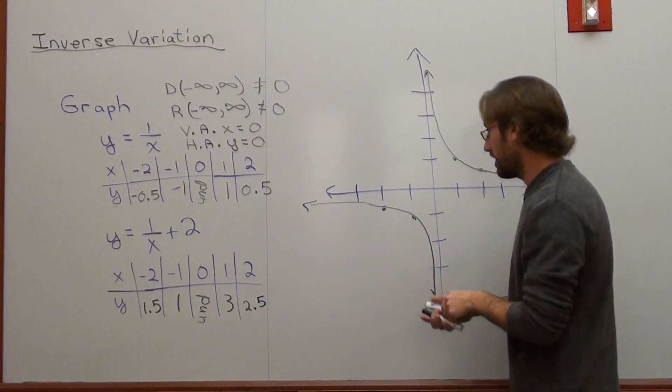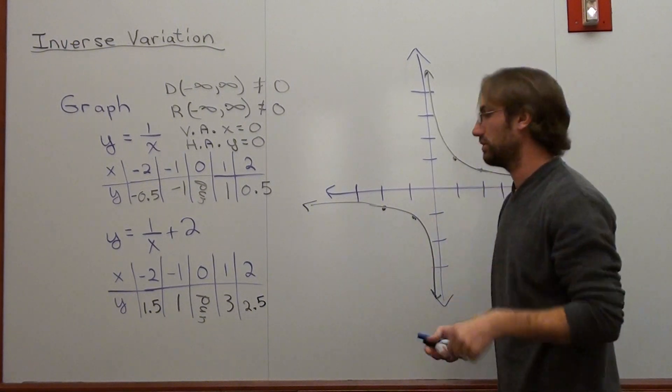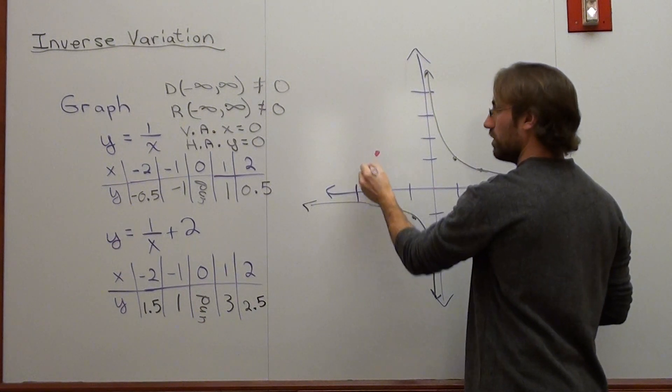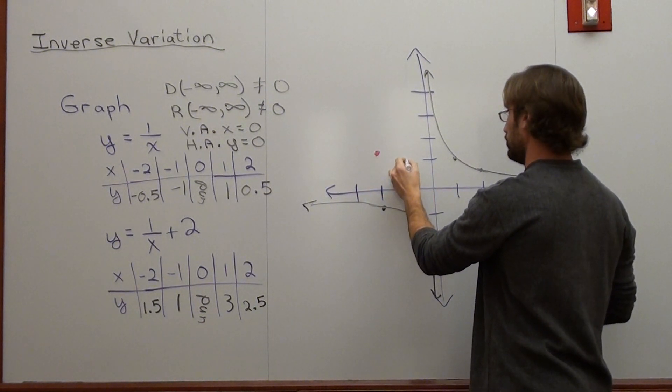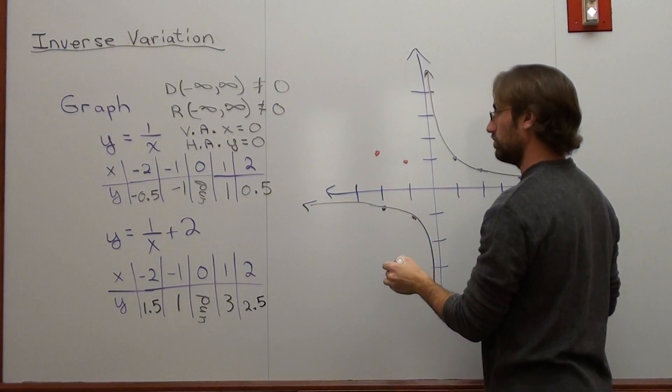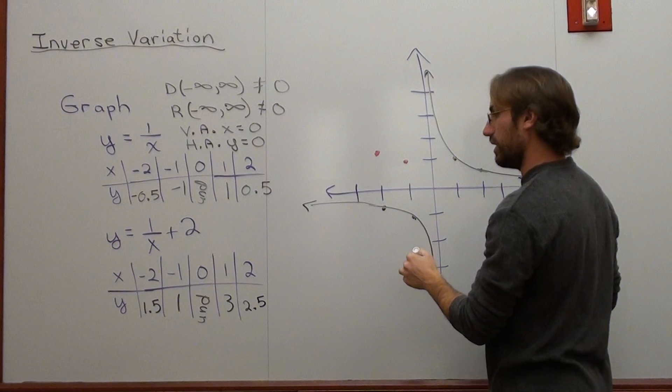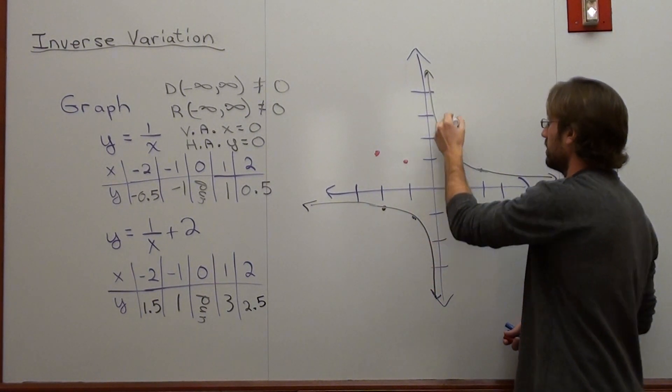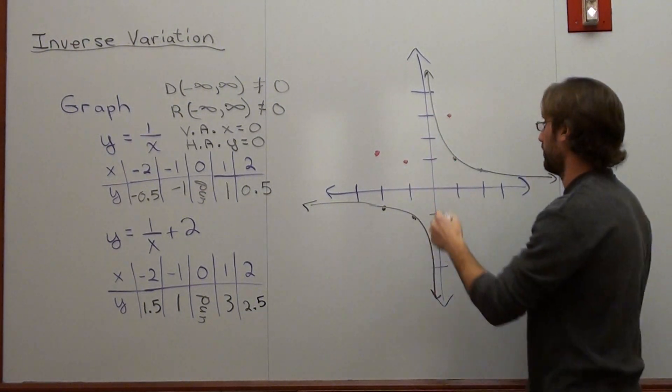If I do this one, I will do this one in red. Negative 2, 1.5. Negative 1, 1. Zero undefined, 1, 3. And 2, 2.5.